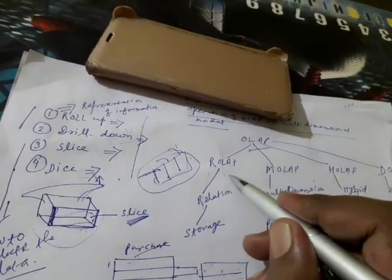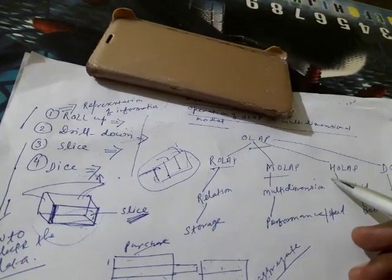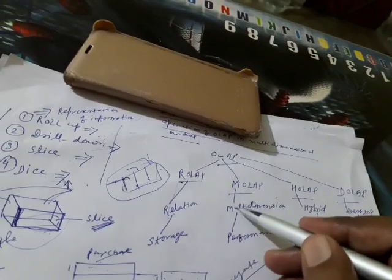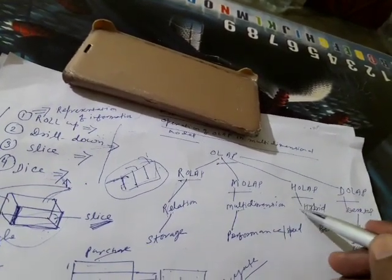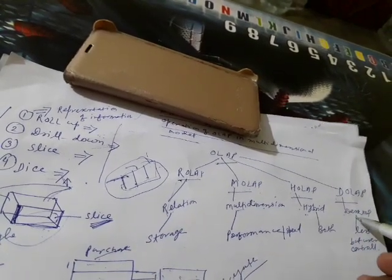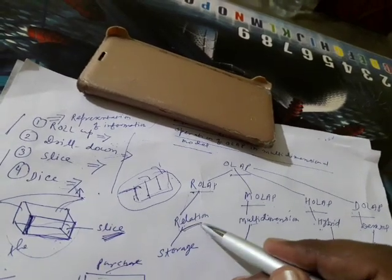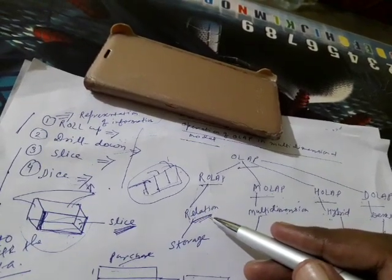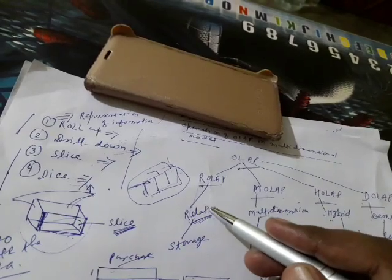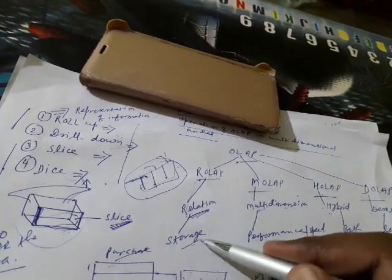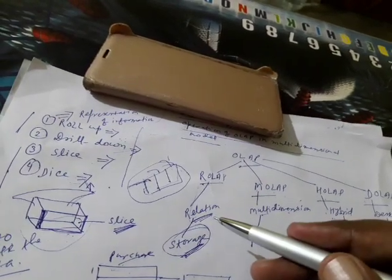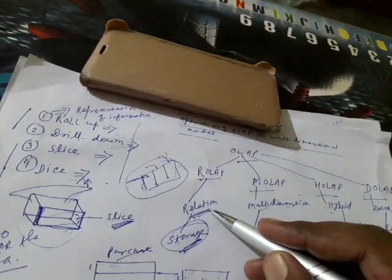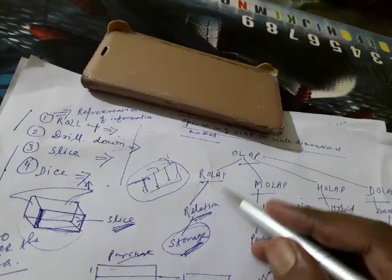Now let's discuss the types of OLAP. There are mainly four types: ROLAP (Relational OLAP), MOLAP (Multidimensional OLAP), HOLAP (Hybrid OLAP), and DOLAP (Desktop OLAP). ROLAP uses relational databases — we can follow ER diagrams, store information, normalize the data, and store huge amounts of data using relational databases.